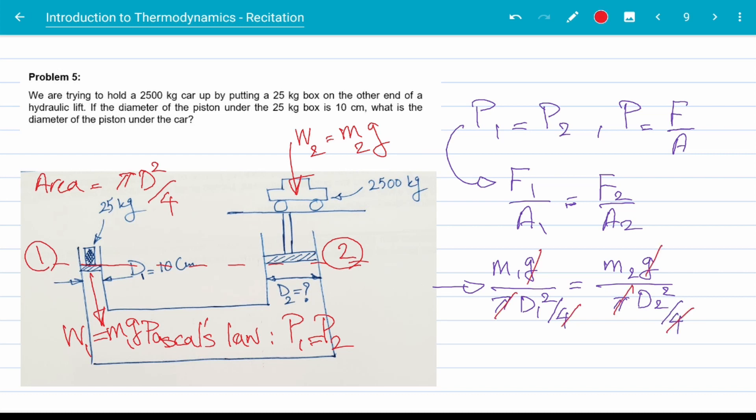Plug in everything we have in this equation. G's, pi's, and 4's are cancelled, and we get d2 squared equals 100 times 100, which means d2 is 100 centimeters.